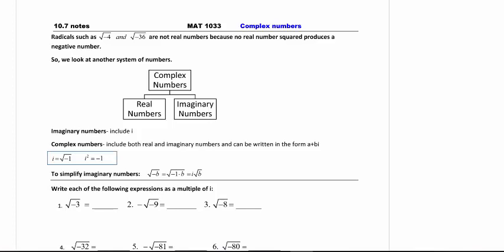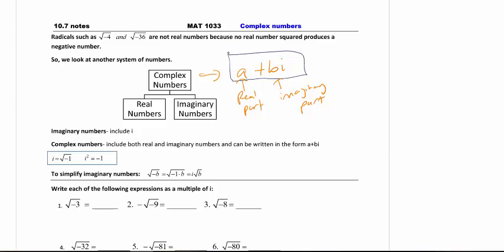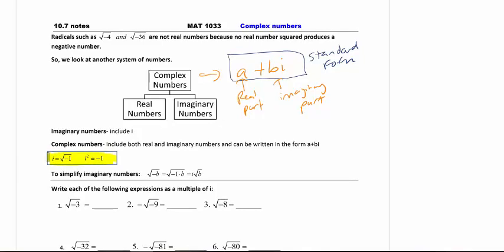Complex numbers are anything that I can write in the form of a plus bi. A is the real part. Bi is the imaginary part. When you're writing answers, always think about writing in standard form — you always write the real part first and the imaginary part last. Imaginary means that it's going to include an i.